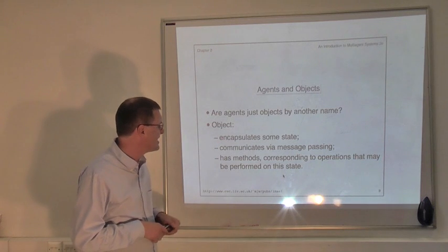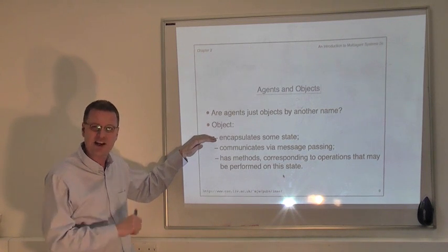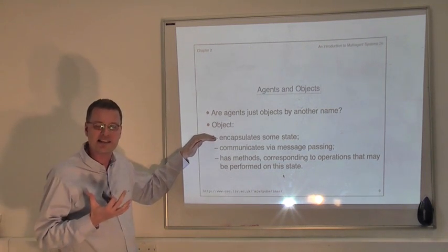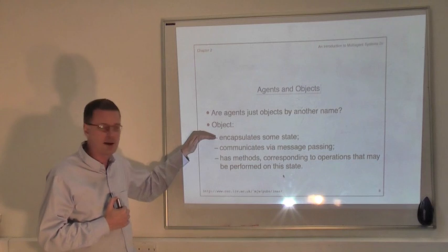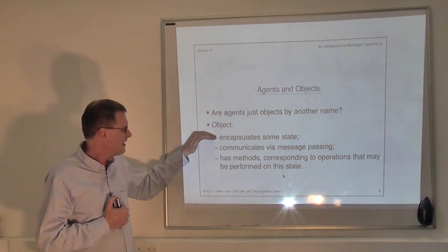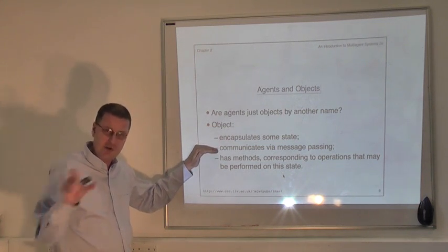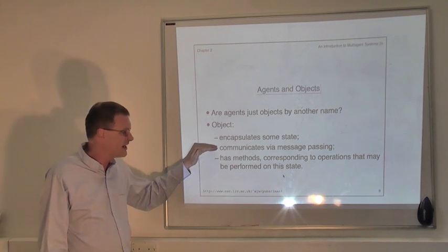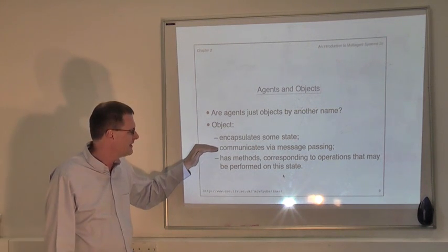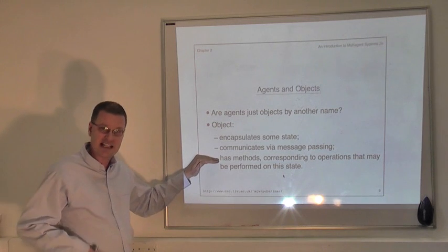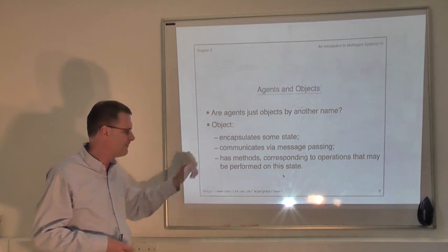So an object in the sense of object-oriented programming has some private state hidden away inside it which is not directly accessible outside. An object has autonomy over its state, it communicates via message passing — represented by method invocation in Java, but very explicit in languages like Smalltalk. And finally, the object has an interface that defines the actions the object can perform.